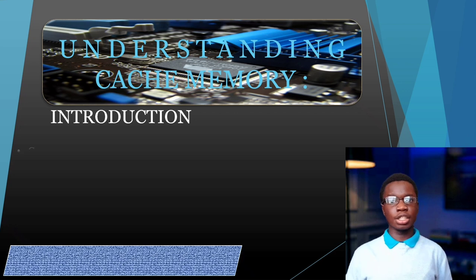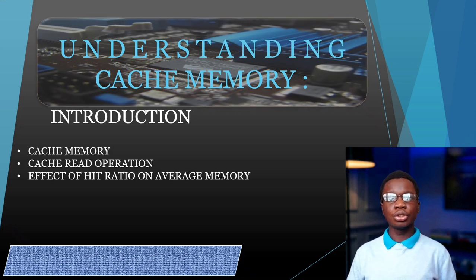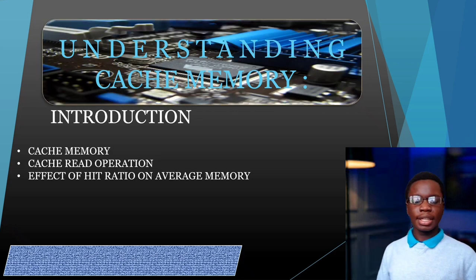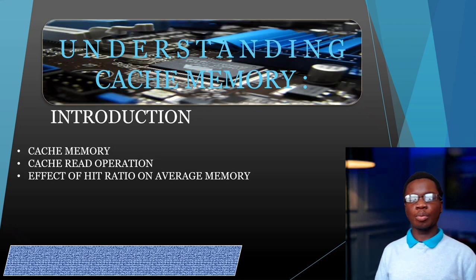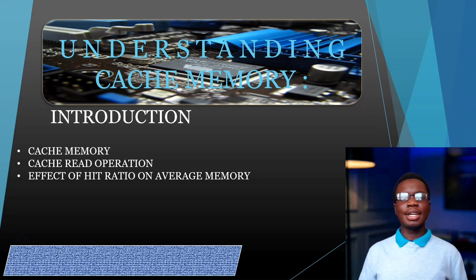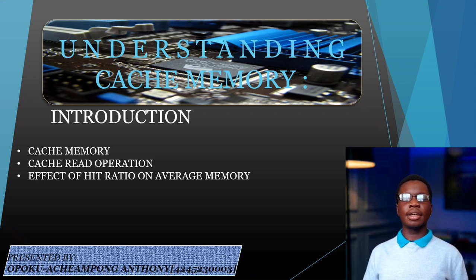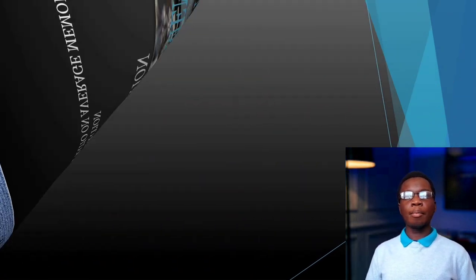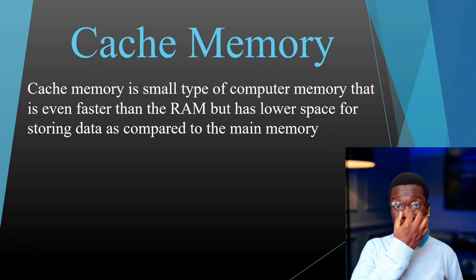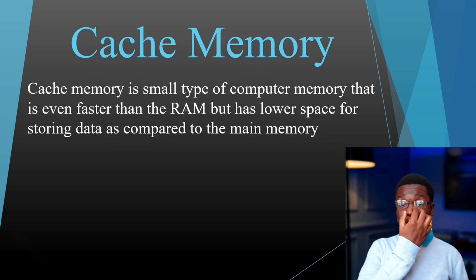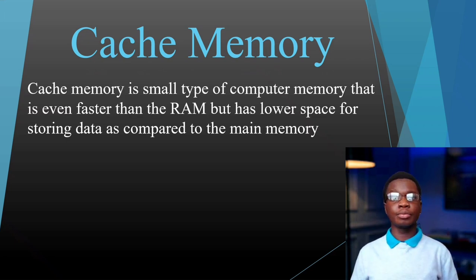Let's dive in, starting with cache memory. Cache memory is a small type of computer memory that is even faster than the RAM, but it has less space for storing data compared to the RAM.